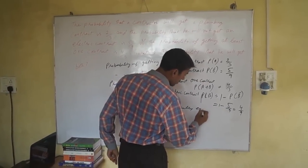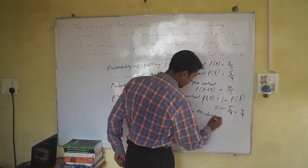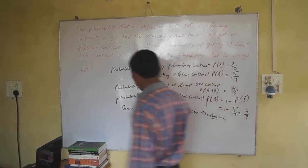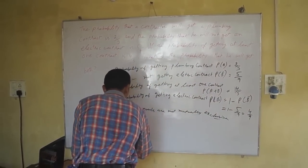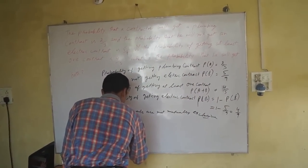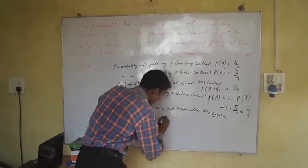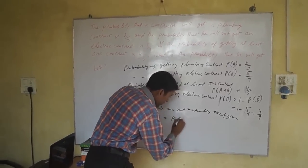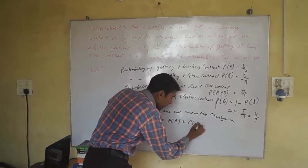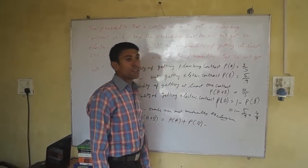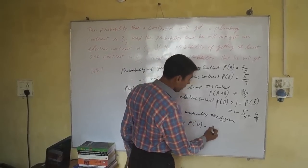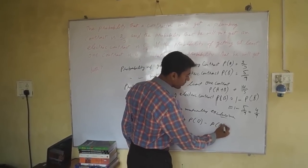Since the events are not mutually exclusive, we use the formula: P(A∪B) = P(A) + P(B) - P(A∩B).